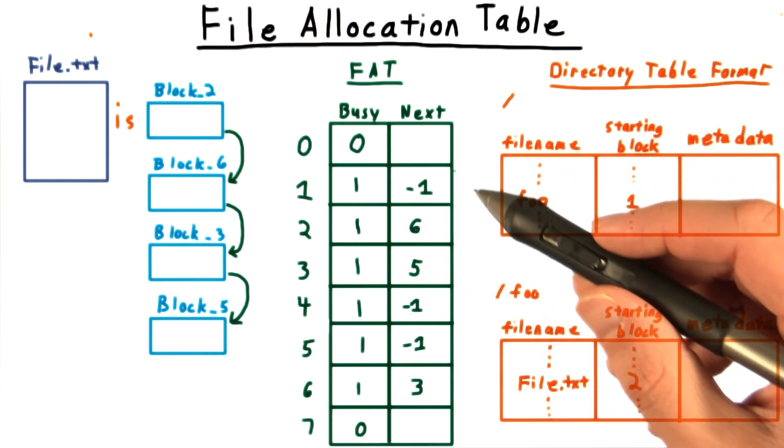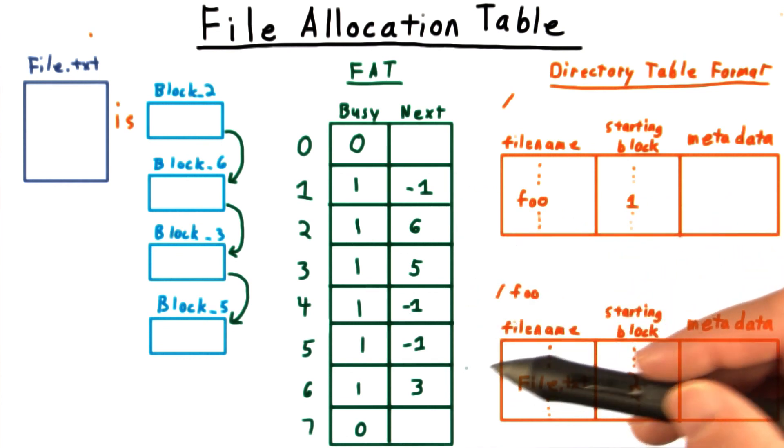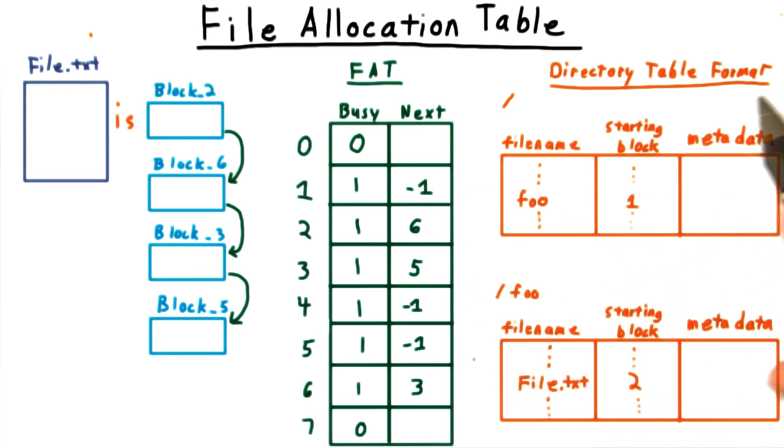Growing a file is as easy as adjusting the next field of the FAT. Space usage is efficient too. If a block is free, then it can be used, and it doesn't matter whether the adjacent blocks are being used or not. This means that the system won't suffer from what is called external fragmentation.